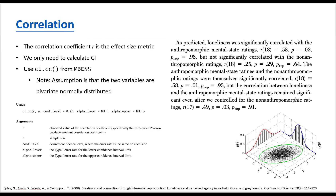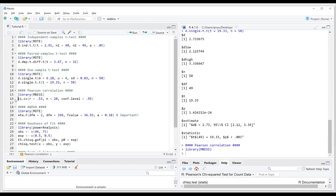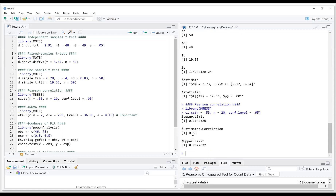Let's talk about Pearson's correlation. For correlation, the correlation coefficient r is the effect size metric. Since people report r for almost every correlation they conduct, we don't need to calculate r — we just need to calculate its confidence interval. There is an assumption here: the two variables underlying the correlation must be bivariate normally distributed, meaning each variable must be normally distributed and their linear combination must also be normally distributed. Back in R, we import the relevant package and call the function with the numbers supplied, and we get a confidence interval calculated for the correlation coefficient.